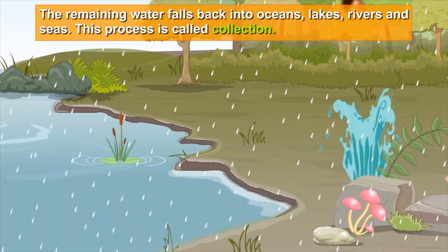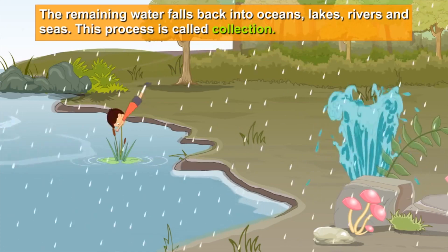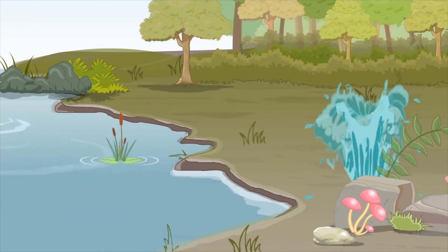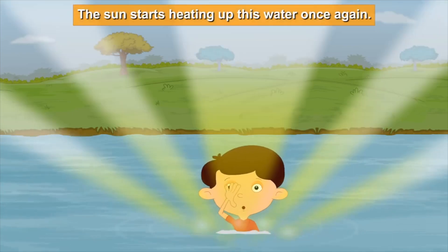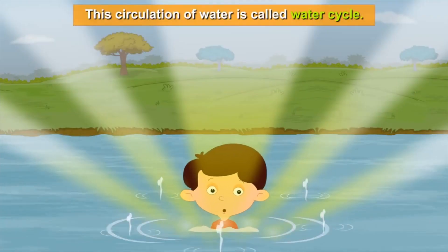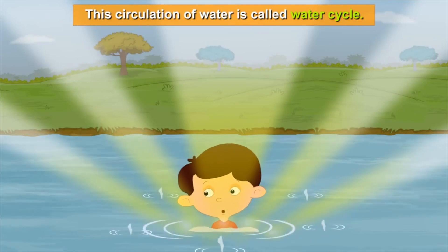The remaining water falls back into oceans, lakes, rivers, and seas. This process is called collection. Then the sun starts heating up this water once again. This circulation of water is called water cycle.